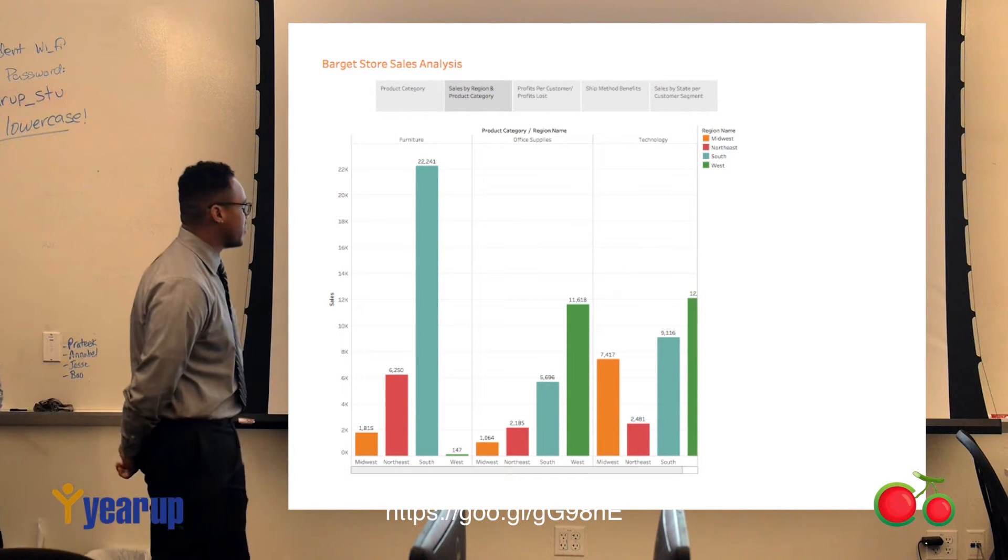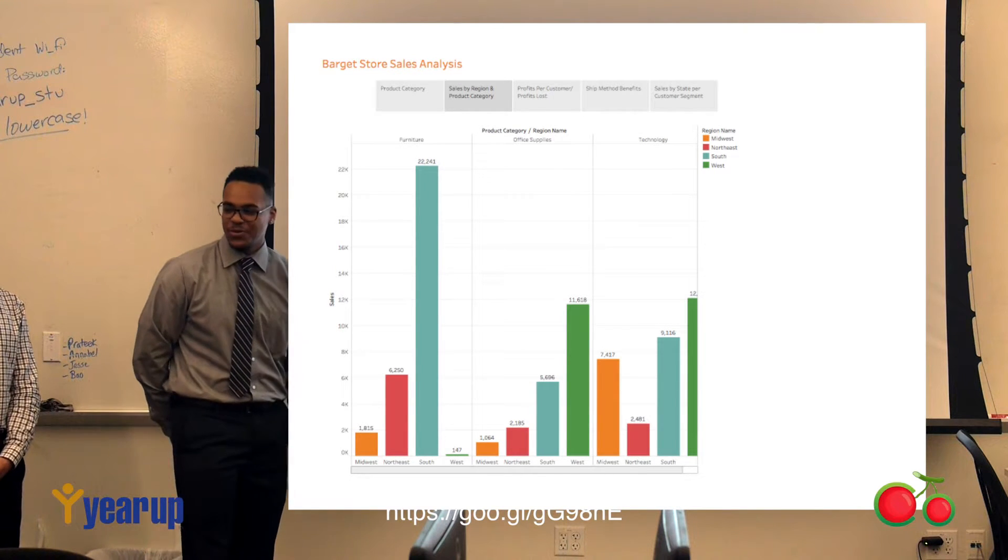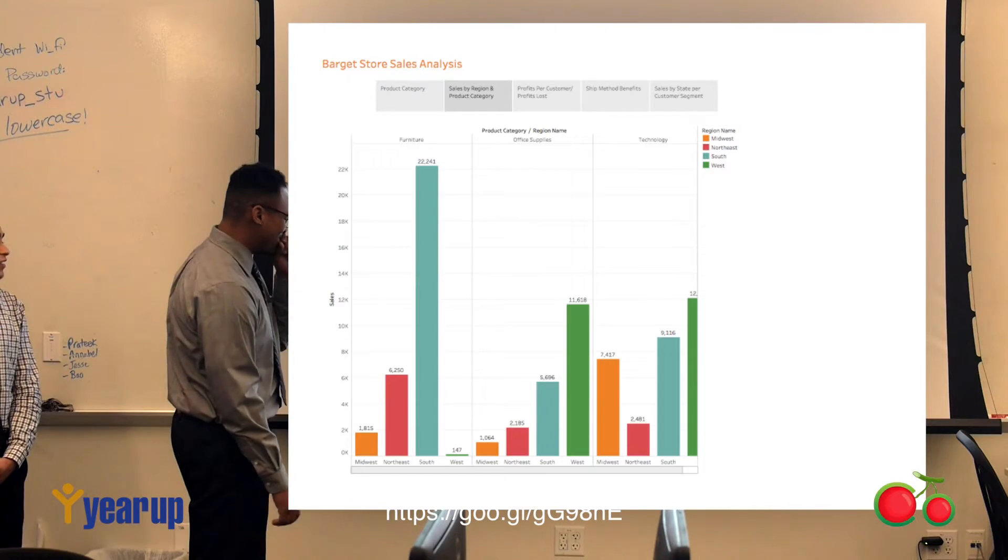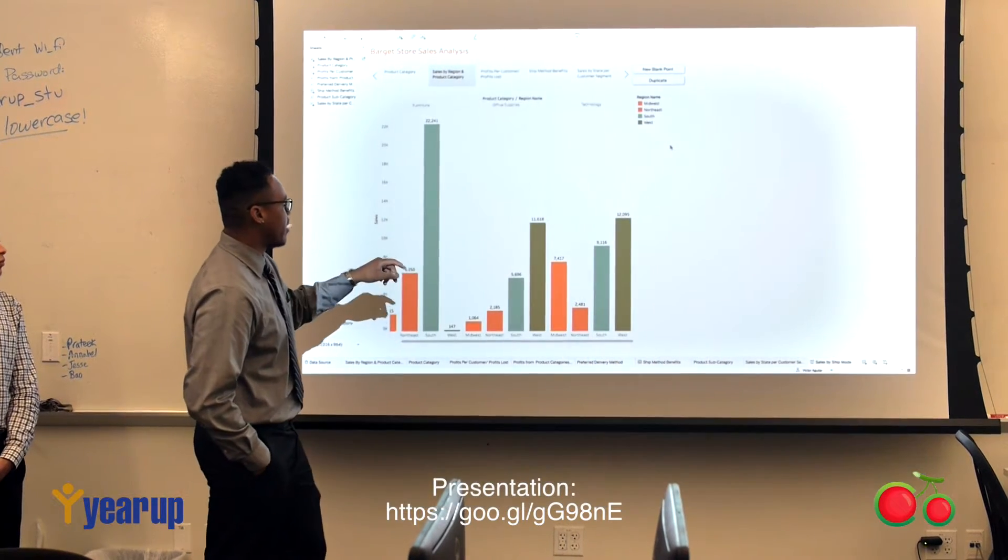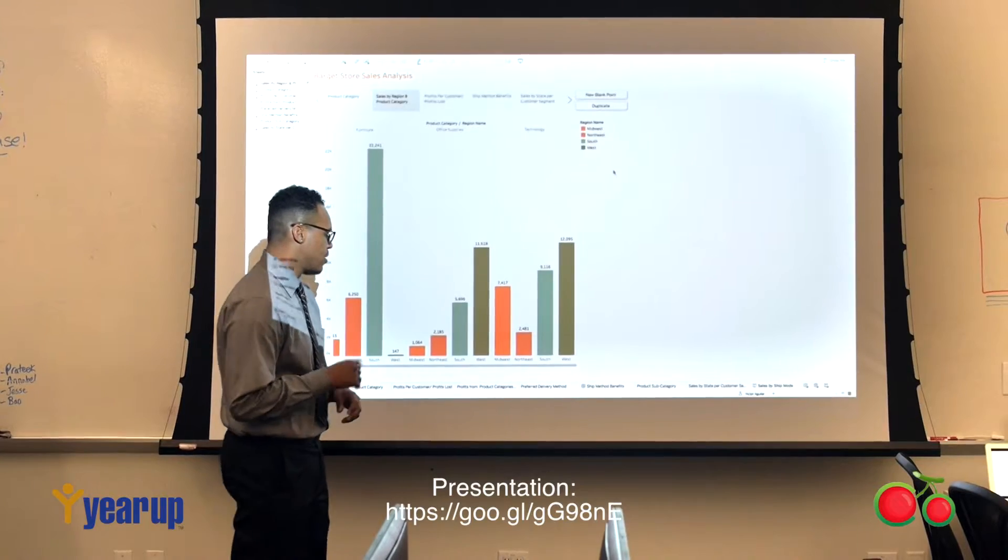Here we notice that we're selling a lot of furniture in the South, 22,241 to be exact. But if we look over here into our product subcategories, office supplies, we see that's our least selling subcategory within the bargain store.